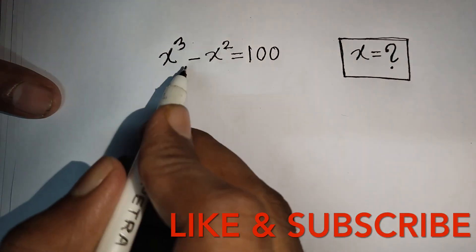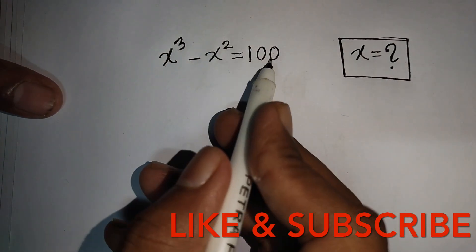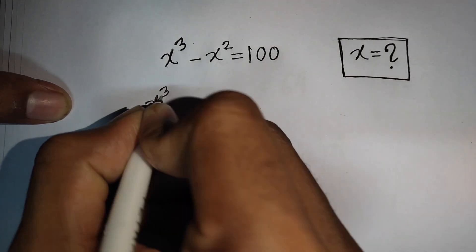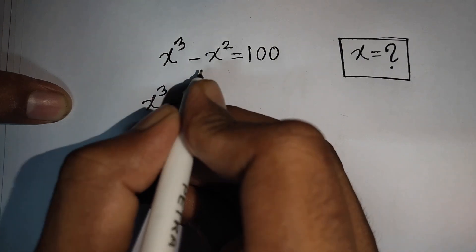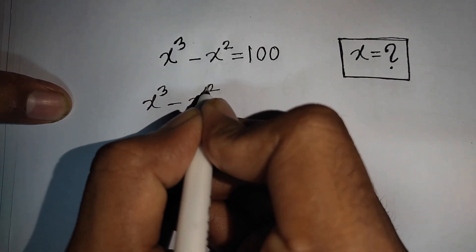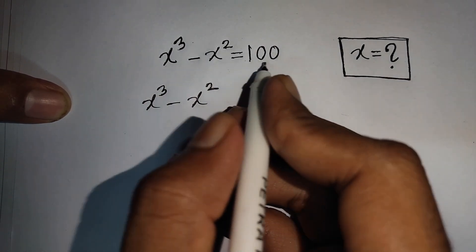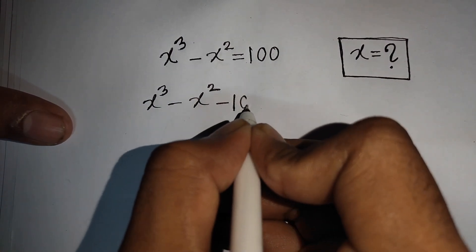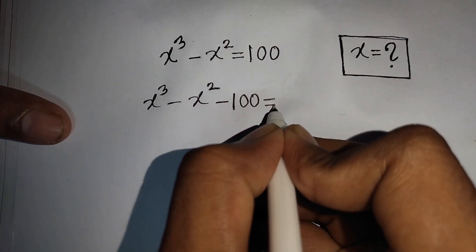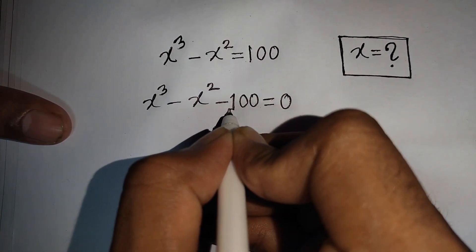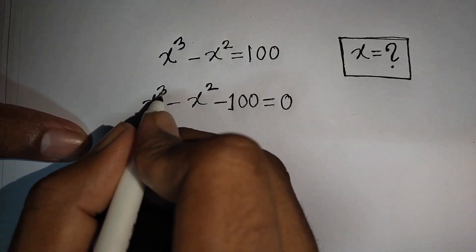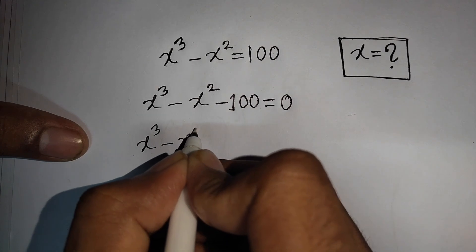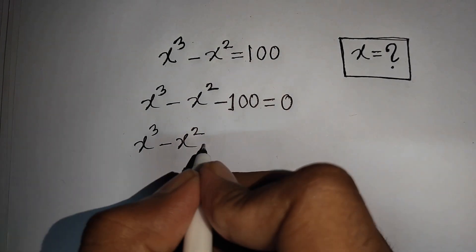How to solve x³ - x² = 100 for x. We have x³ minus x², and taking 100 to the left side gives minus 100, equal to 0. So we have x³ minus x² minus 100, which can be written as...